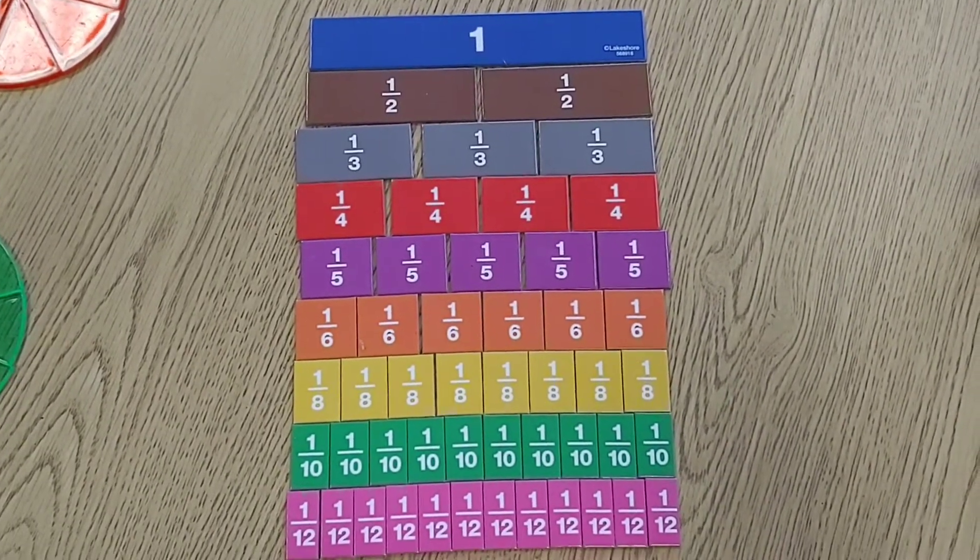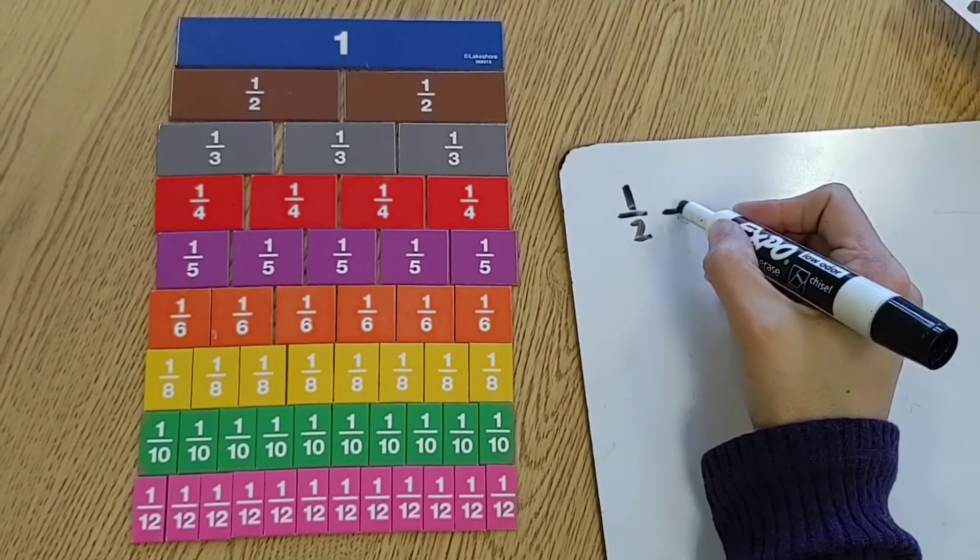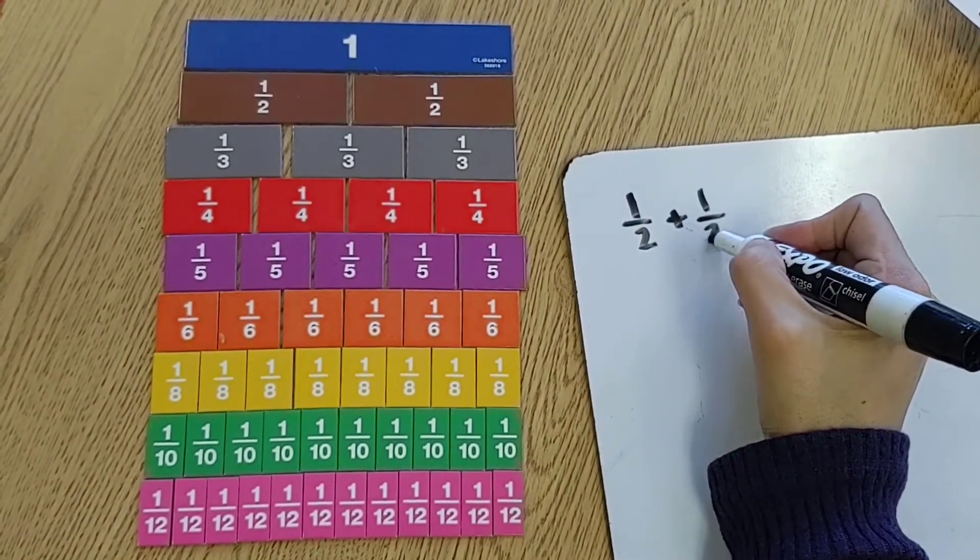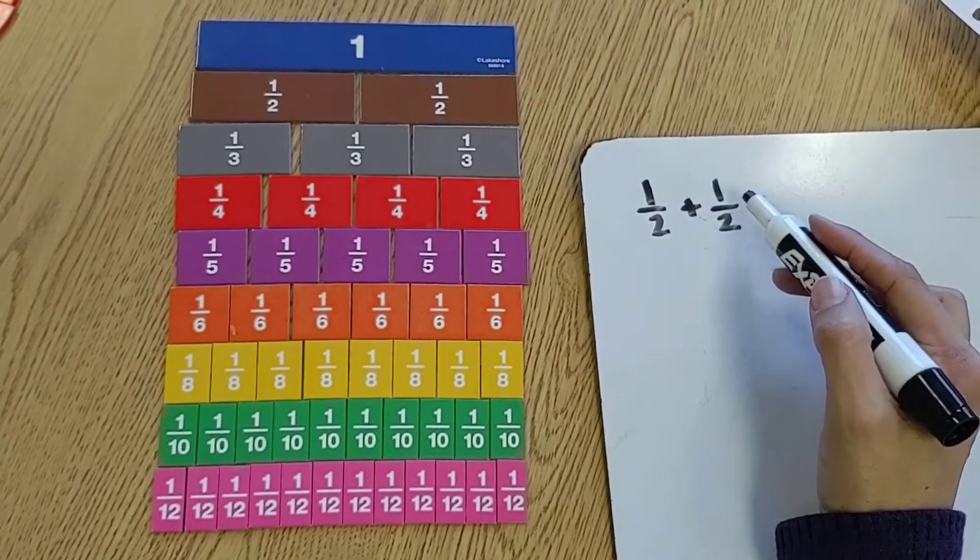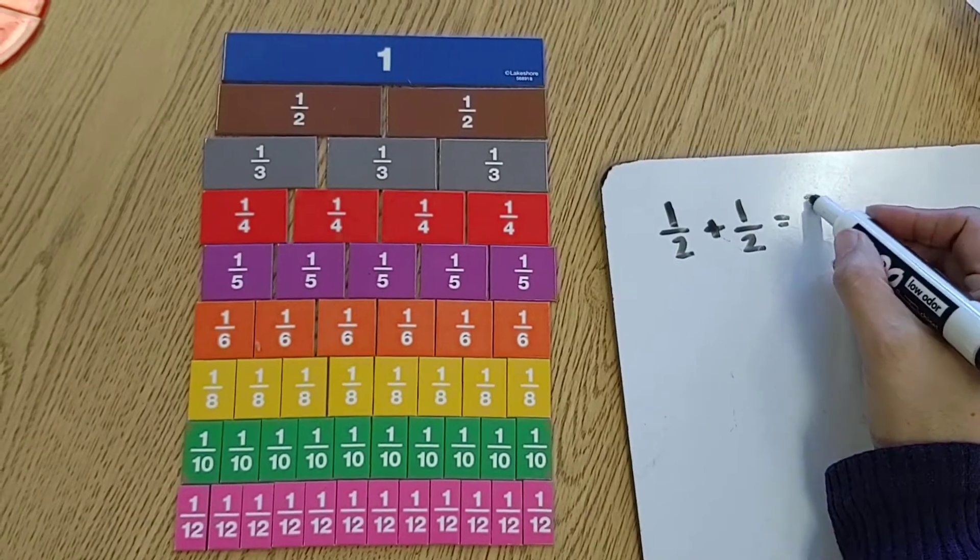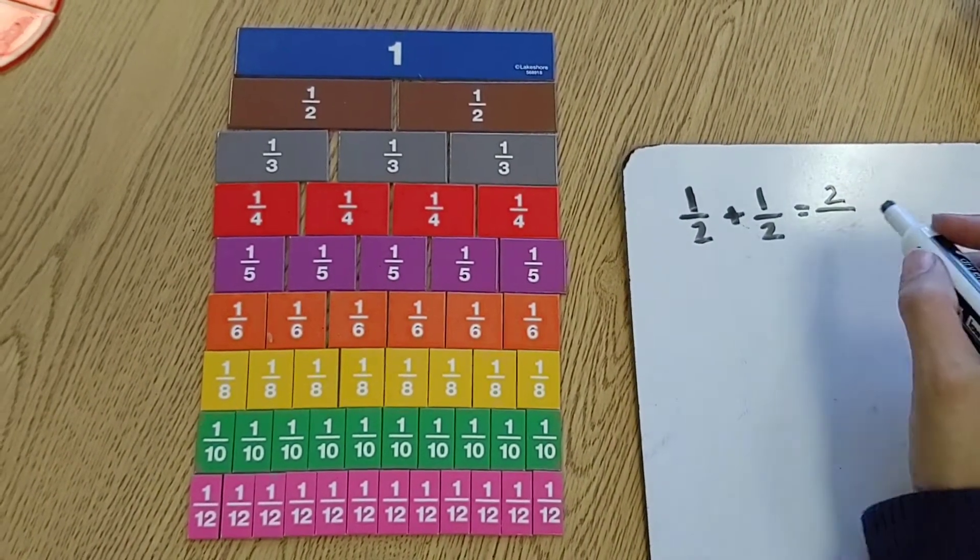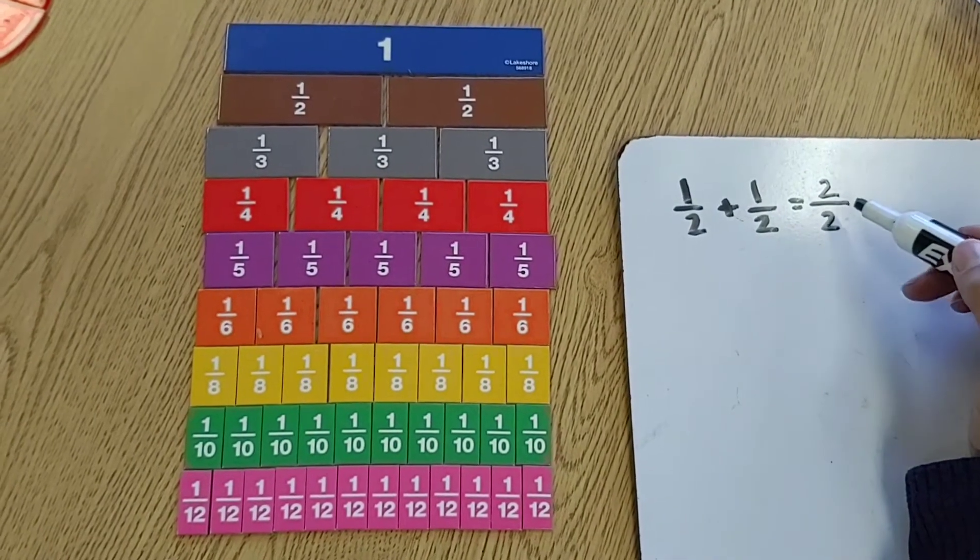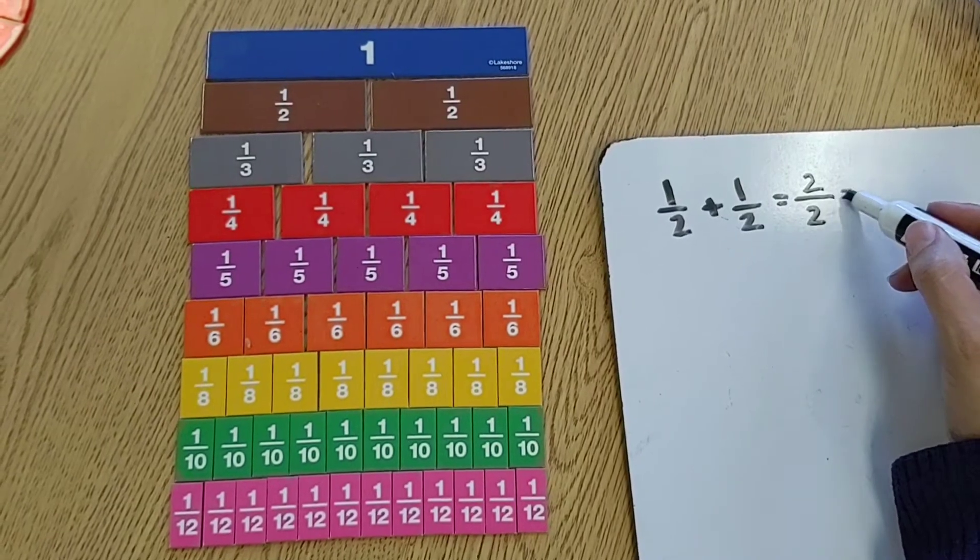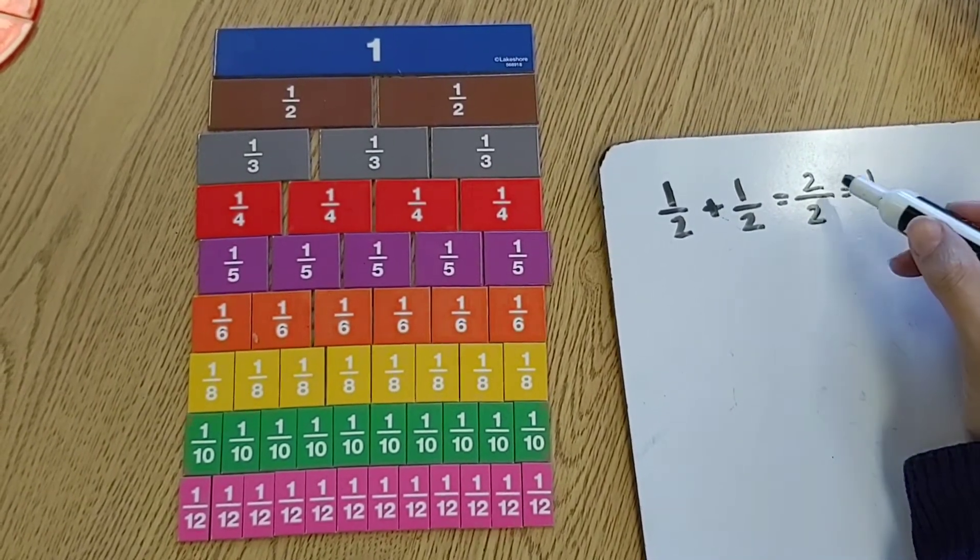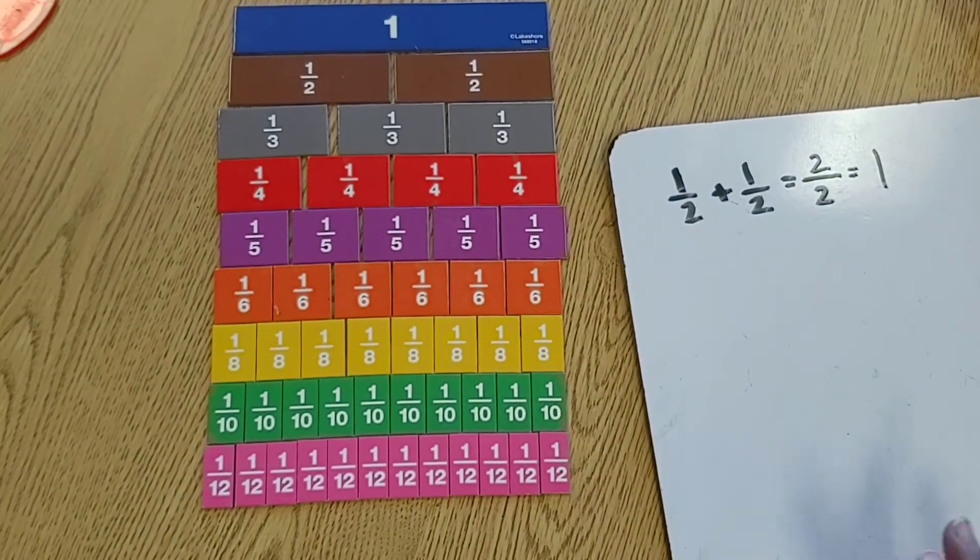Let me show you what that would look like. One half plus one half. You only add the numerators. Numerator is your top number, and one plus one is two. You do not add your denominators, so it stays two. When your numerator and your denominator are the same number, it equals one whole, because two divided by two gives you one.